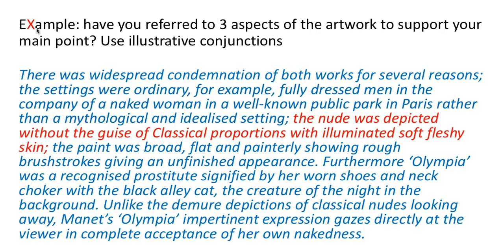The nude was depicted without the guise of classical proportions, with illuminated soft fleshy skin — this naked woman in Manet's 'Luncheon on the Grass' was simply seated as if at a picnic, not the reclining graceful nude so familiar in classicist works. The paint was broad, flat, and painterly, showing brushstrokes and giving an unfinished appearance. Furthermore, 'Olympia' was a recognized prostitute, signified by her worn shoes and neck choker, with a black alley cat in the background.